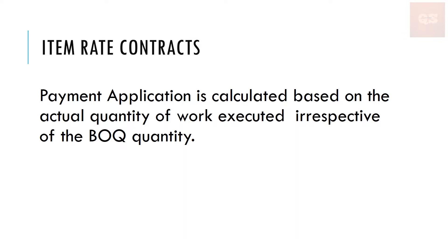An item rate contract is when the payment application is calculated based on the actual quantity of work executed, irrespective of the BOQ quantity. For example, if your BOQ quantity is 50 for an item but the actual work executed becomes 60, you can claim this in your payment applications without any variations. In a lump sum contract this additional quantity would be a variation, but in an item rate contract it becomes part of your payment application, and depending on the percentage of increase, the contract may allow rate modifications.